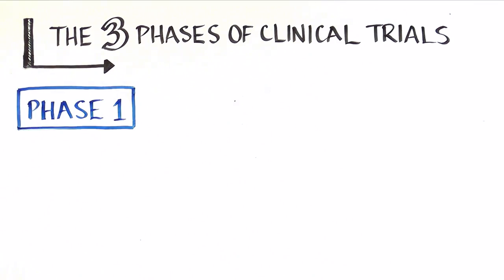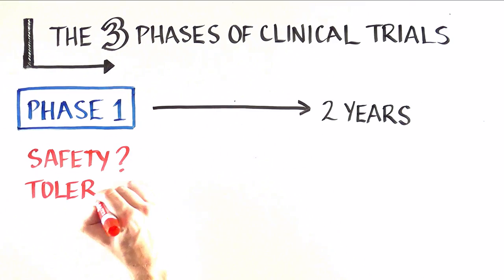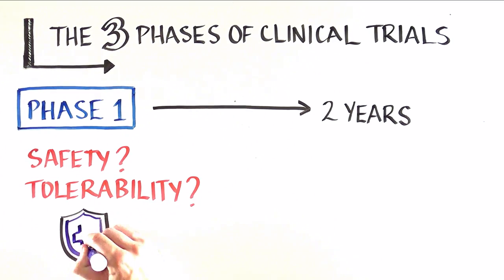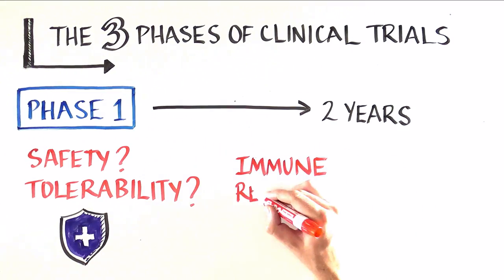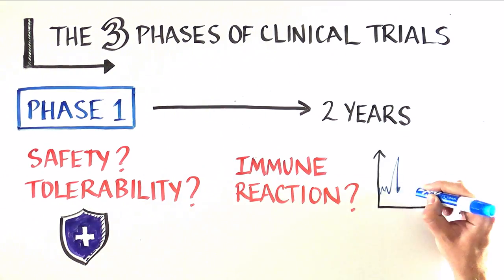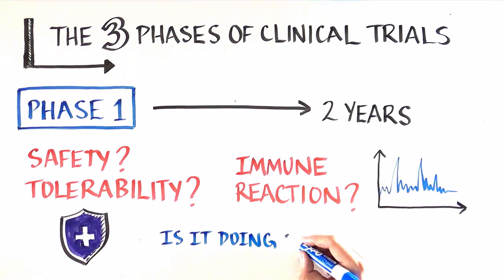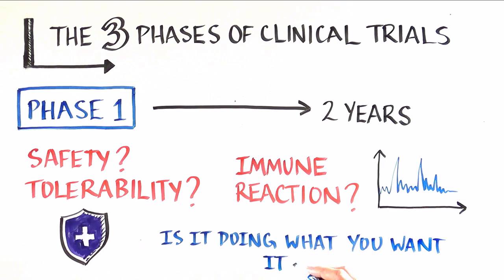Phase 1 trials, which can last up to two years, compare the safety—does the vaccine cause any side effects—and tolerability—does the injection hurt, and for how long. In this phase, scientists are also gathering information about the body's immune response to the vaccine, to see whether it is a promising approach to preventing the specific infection. Phase 1 trials do not determine whether or not the study product is actually doing what we hope it will do.